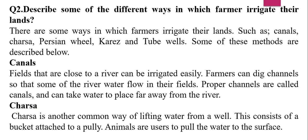Now let's look at long question number 2 and describe some of the different ways in which farmers irrigate their land. There are many ways to irrigate land. These are canals, charsa, Persian wheel, hakaris, and tube wells. Some of these methods are described below.